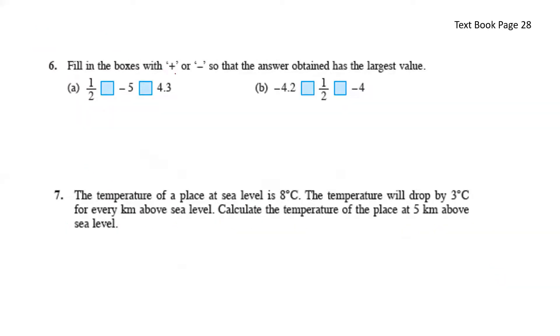Fill in the box with positive or negative so that the answer obtained has the largest value. In order to get the largest value, we always have to add numbers. Which means we have to make it into a positive symbol. Here, we have a negative number. In order to make this whole operation a positive, an addition, we'll have to put a negative here.